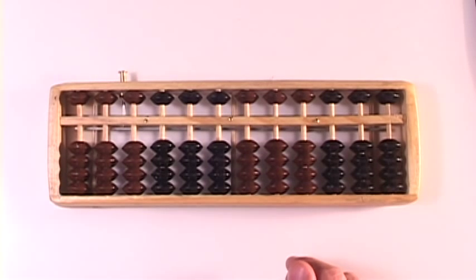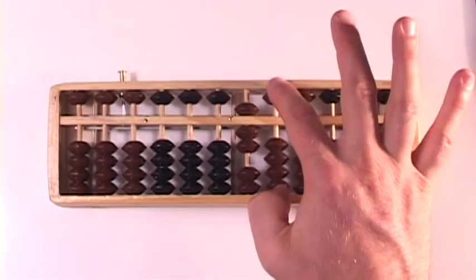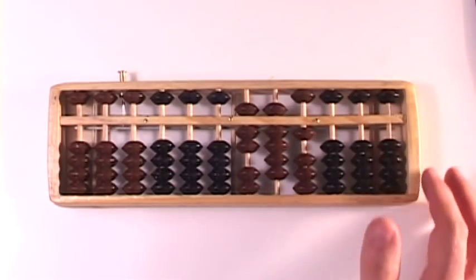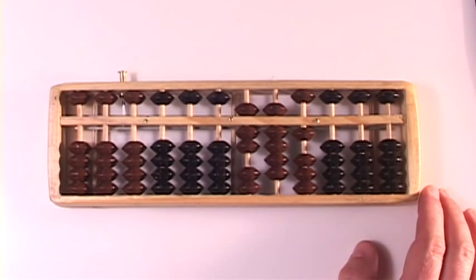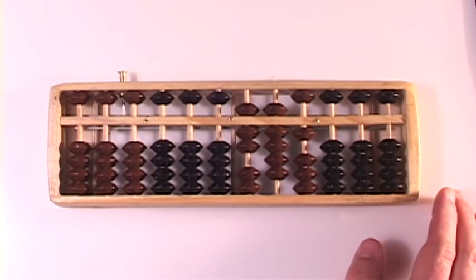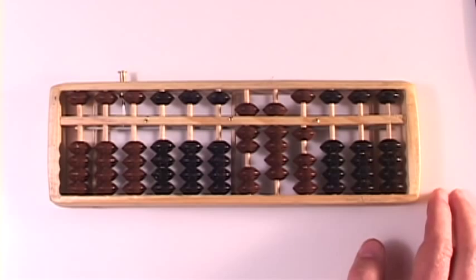Let's do the next one. Set the number 791 on your Abacus. A 7, a 9, and a 1. There it is, 791. And we're going to subtract the same number. We're going to subtract 126 from that. So, 791 minus 126.